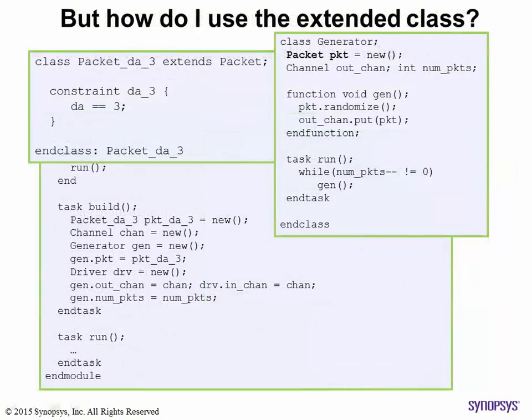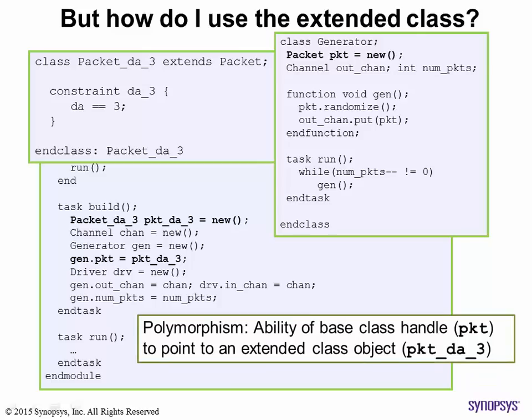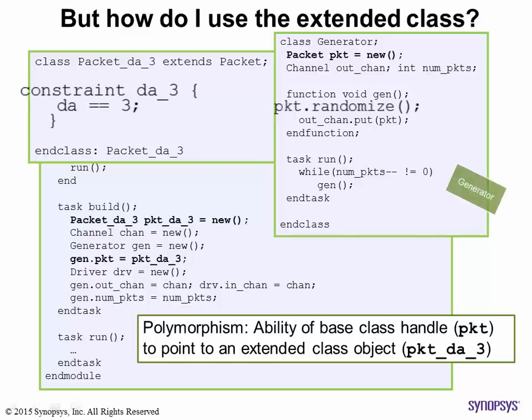The goal is to replace an existing object with an object of the extended class, so you can simply point the original handle to the new object. This is called polymorphism — the ability of a base object handle to point to an extended object. This is what enables us to use OOP and make changes using inheritance without those changes having a cascading effect on the rest of the test bench. Different methodologies like UVM and VMM may have different techniques of achieving this, but they all use the principle of polymorphism under the hood. When the extended class object is randomized, it also uses the added constraints.